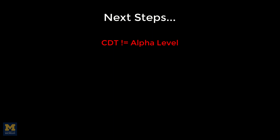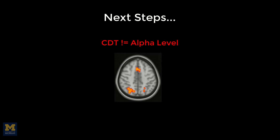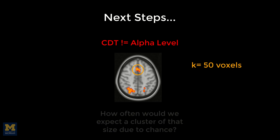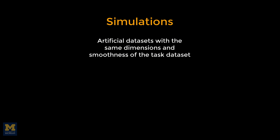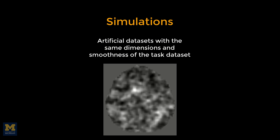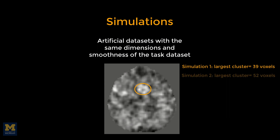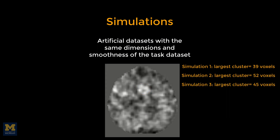Remember that a cluster-defining threshold is not the same as an alpha level. It could be that clusters as large as the ones in our group analysis are just as likely to be found in images created from pure noise. For example, if our cluster in the medial prefrontal cortex is 50 voxels large, we need to ask how often we would expect a cluster of that size to appear due to chance. To answer this, we run simulations — we create artificial datasets with the same dimensions and smoothness as our task dataset, but composed of pure noise. We then write down the size of the largest cluster that passes our cluster-defining threshold and repeat the process with another simulated dataset.